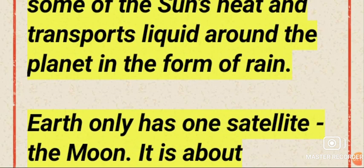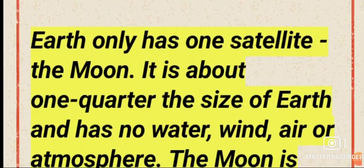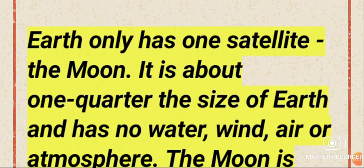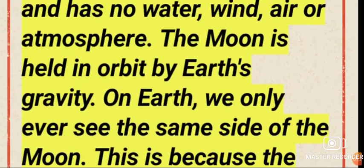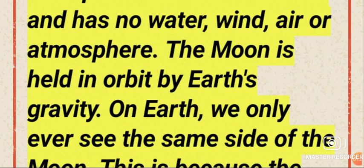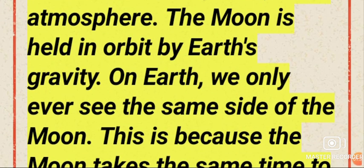Earth only has one satellite, the Moon. It is about one quarter the size of Earth and has no water, wind, air, or atmosphere. The Moon is held in orbit by Earth's gravity.